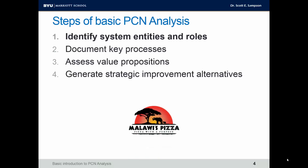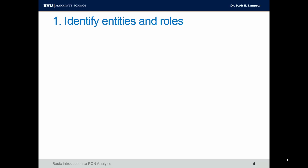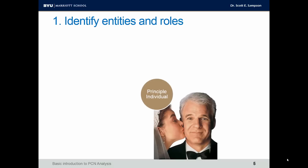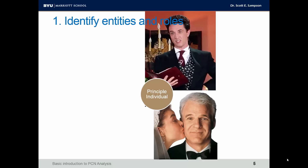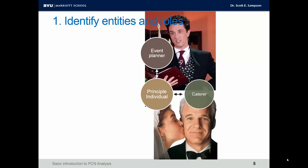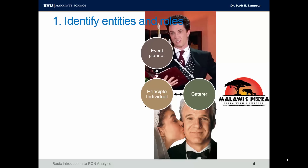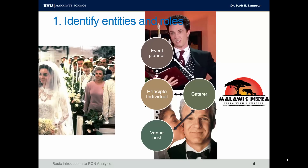Let's look at the Malawi's Pizza Catering case. In the case, it talked about a number of roles. We're going to look at catering a wedding event. So we have the principal individual — the entity commissioning the event and providing payment. We have perhaps an event planner hired to provide planning expertise. We have the caterer, in this case Malawi's Pizza. We have the venue host that the caterer will have to interact with, and we have the event attendees.